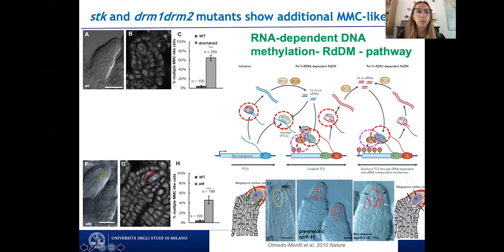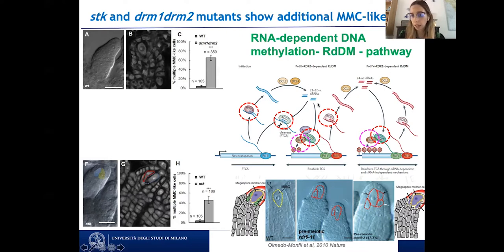RDR6 and ARGONAUTE9 act in the most important RNA-mediated epigenetic silencing pathway in plants: the RNA-dependent DNA methylation (RdDM) pathway. Within this pathway, silencing occurs in two ways, both mediated by Argonaute proteins. Argonaute proteins can load one strand of a short interfering RNA duplex and perform mRNA cleavage by complementarity — post-transcriptional gene silencing — or Argonautes can recruit DRM domain rearranged methyltransferases and use the siRNA strand to directly methylate DNA, establishing transcriptional gene silencing.